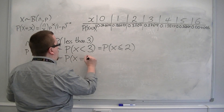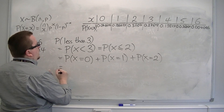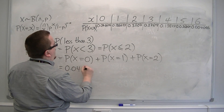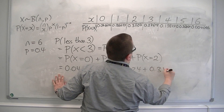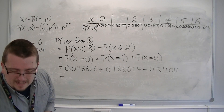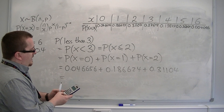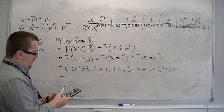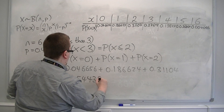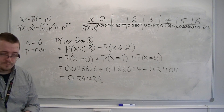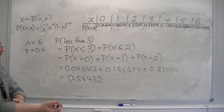It's the probability of x being equal to 0, plus the probability of x being equal to 1, plus the probability of x being equal to 2. That's 0.046656, plus 0.186624, plus 0.31104, which gives 0.54432. So that's the probability, but as you can see, it's quite a long-winded process if we do it this way.